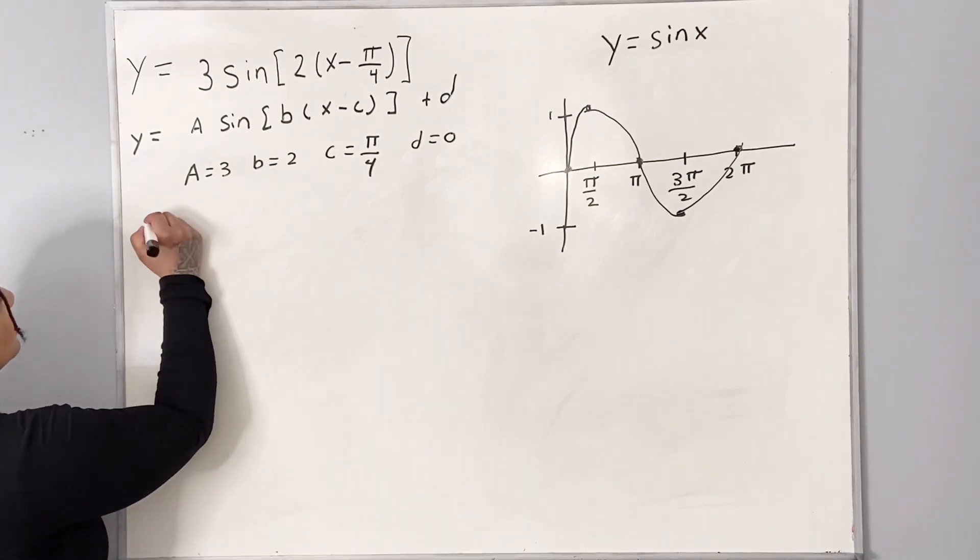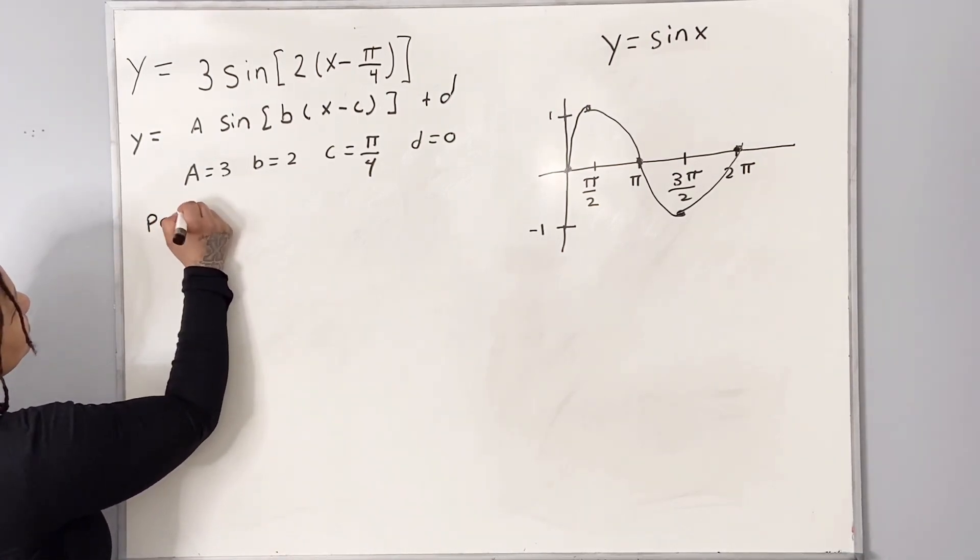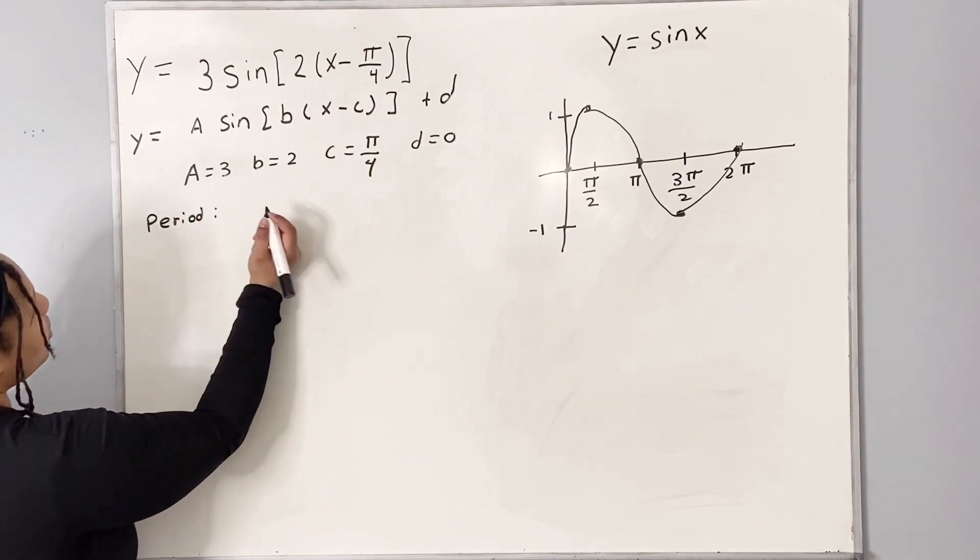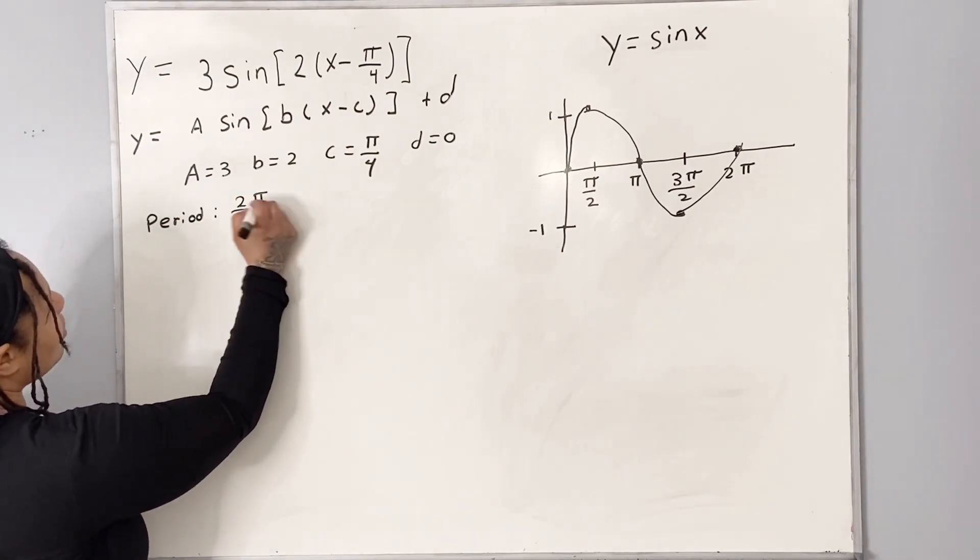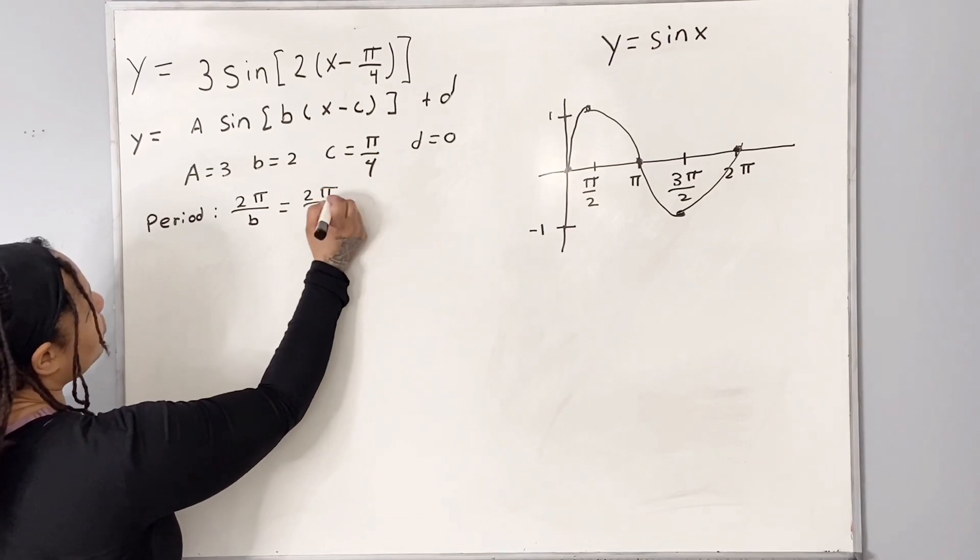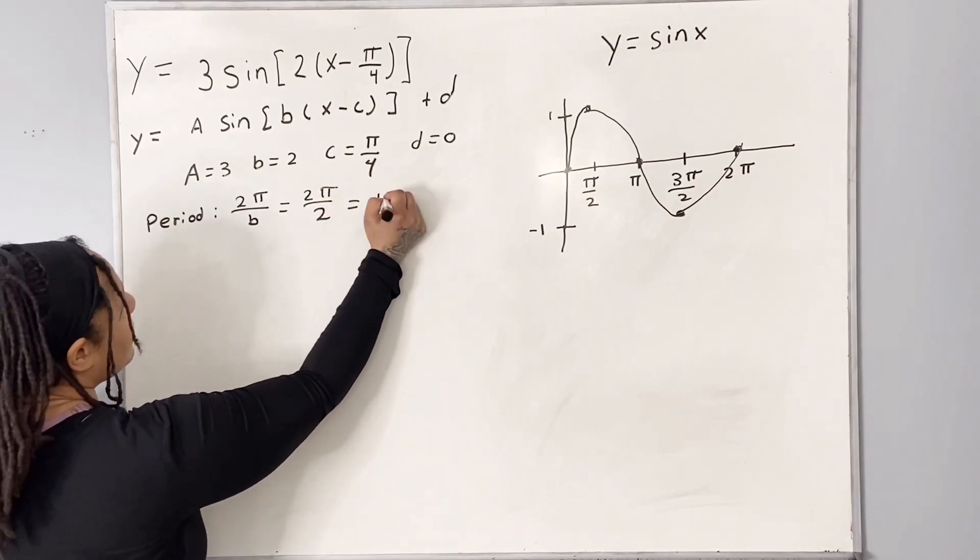So the period is going to be 2 pi over b, which is equal to 2 pi over 2, which is equal to pi.